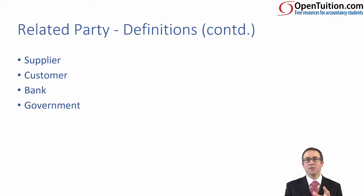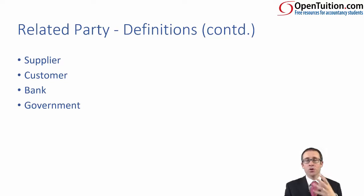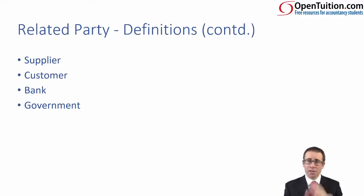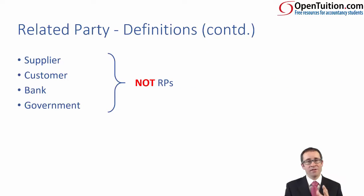None of those entities — suppliers, customers, bank or the government — have the power to influence your decisions in terms of operating, financing or investing decisions. They haven't got the right to be heard; they can't attend board meetings. So therefore, they are not related parties by definition — never have been, never will be. Be aware of what are related parties and what are not related parties.